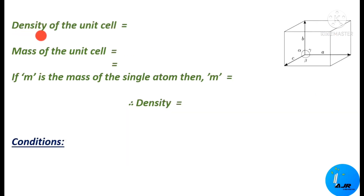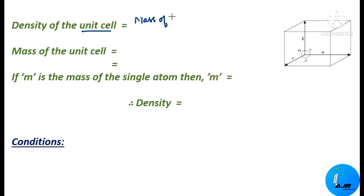We are in need of the density of the unit cell. So what is density? Normally the formula for density is mass by volume. So here, since it is asked for the unit cell, we have to write it as mass of the unit cell divided by volume of the unit cell.